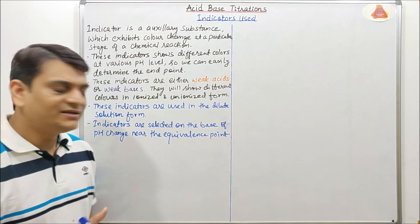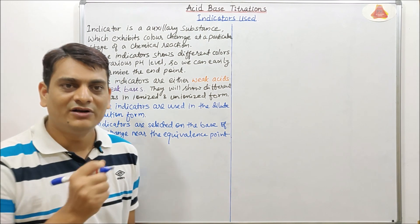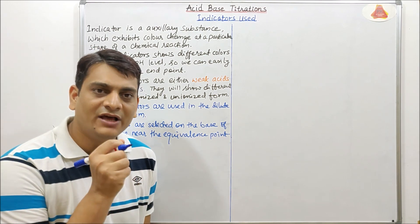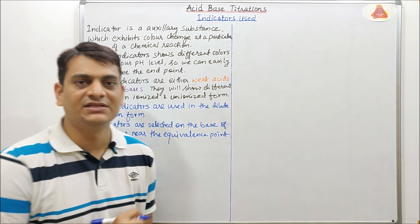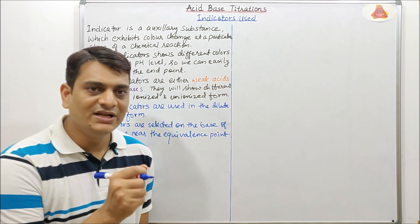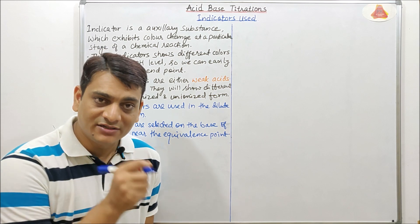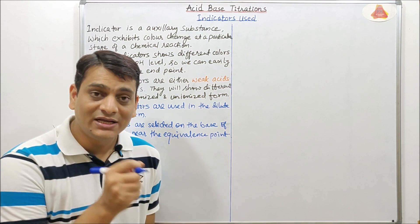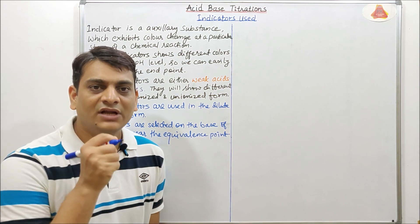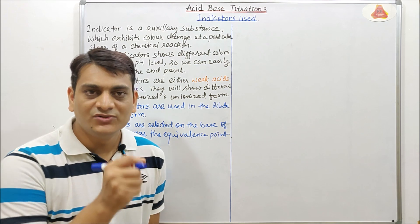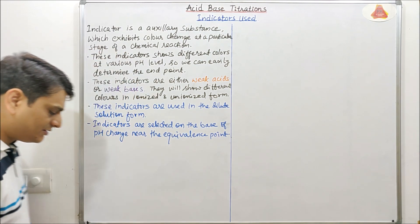Selection of indicator is completely dependent on the equivalence point. For example, if we are getting the equivalence point near pH 7, we will select those indicators which will show a distinct color change near pH 7. Now let's look at the indicators used in various types of acid-base titrations.